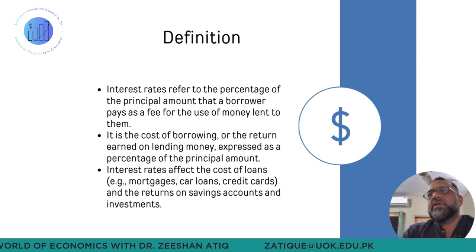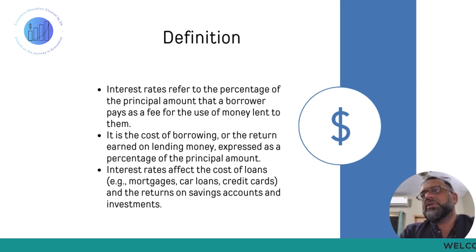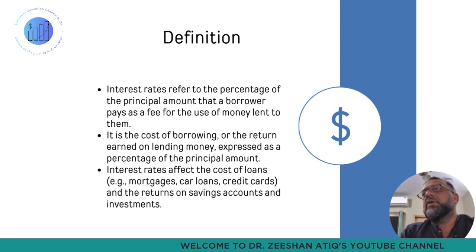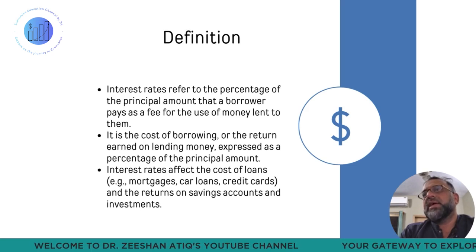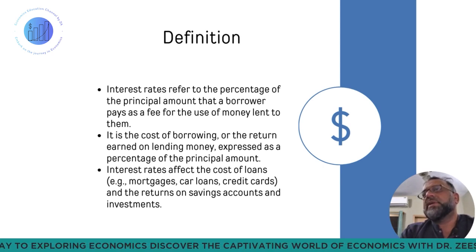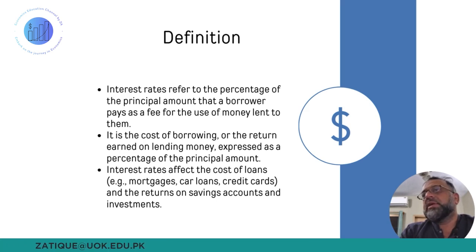To begin with, interest is defined as the cost of borrowing. Just as you borrow commodities and pay rent on them, conventional banking and economics defines interest rate as the cost of borrowing. When you use somebody else's money, you pay a cost for using it. Formally, interest rates refer to the percentage of the principal amount that a borrower pays as a fee for the use of money lent to them. The lender forgoes use of that money and must be compensated — this compensation is the interest rate, or the return on lending money.